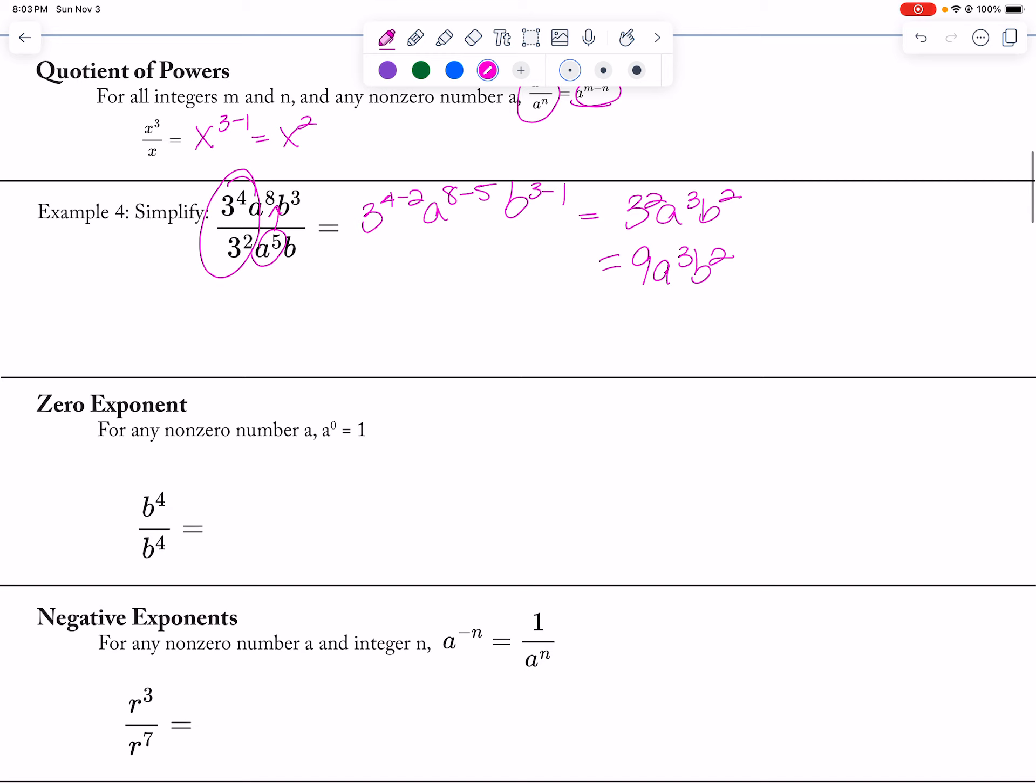Anything to the 0 power is 1, because if I have b to the 4th over b to the 4th, this is b to the 4 minus 4, which is b to the 0 power. But anything over itself is 1, so that's why b to the 0 power is 1.